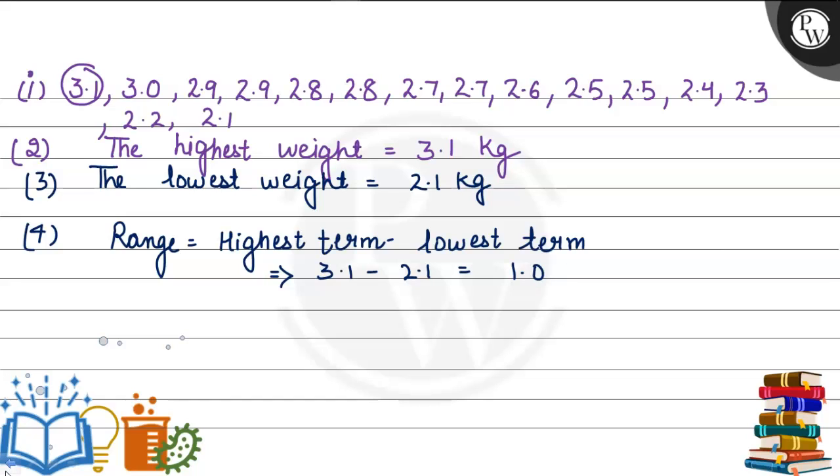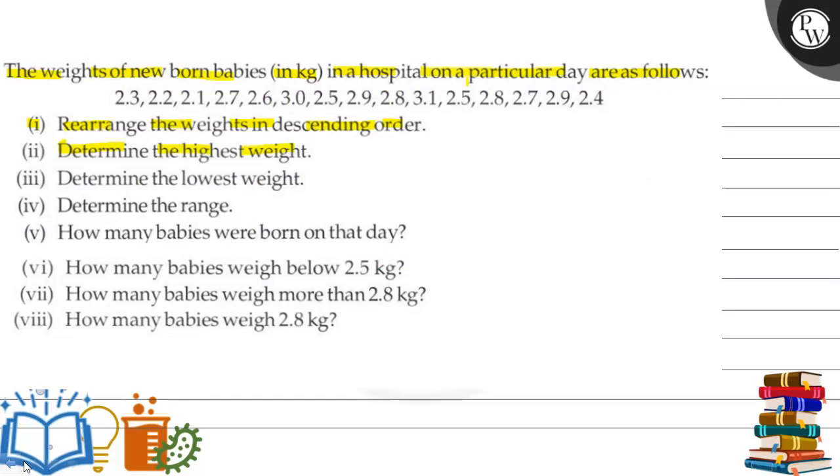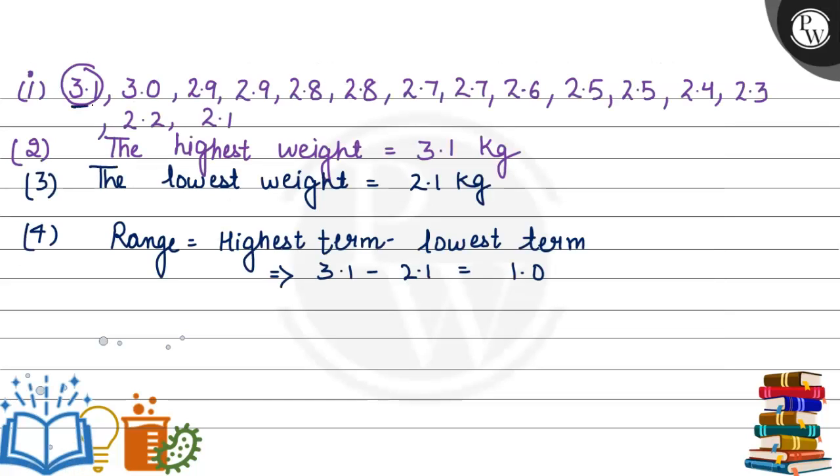Next part: how many babies were born on that day? Counting the total: 1, 2, 3, 4, 5, 6, 7, 8, 9, 10, 11, 12, 13, 14, and 15. The number of babies born on that day will be 15.